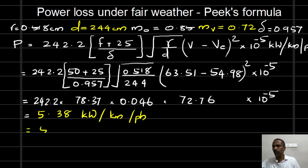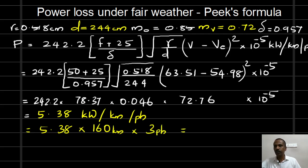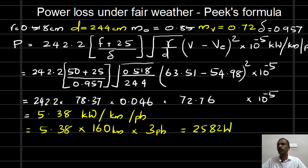The total corona loss for the good weather condition is 5.38 kilowatt per kilometer per phase, multiplied by the line length of 160 kilometers and 3 phases, giving a total of 2582 kilowatt. This is the power loss due to corona formation under the fair weather condition.